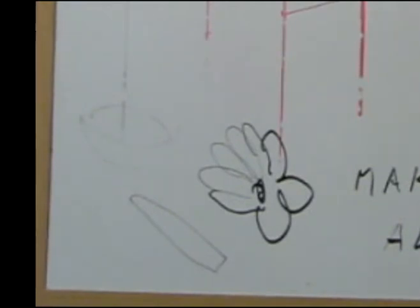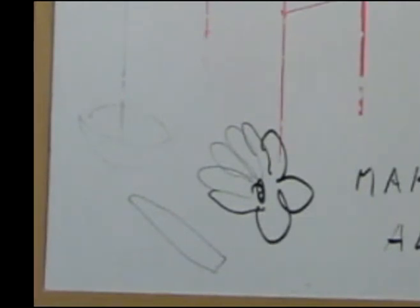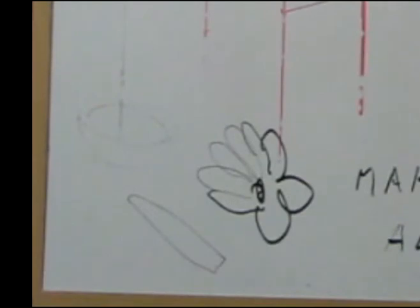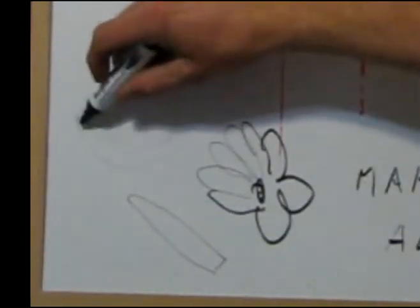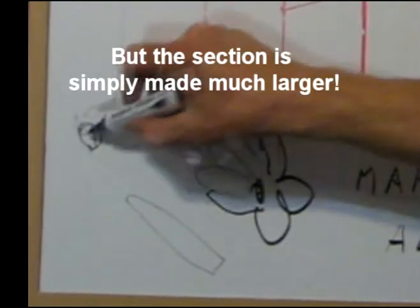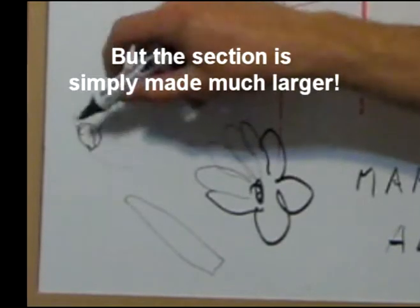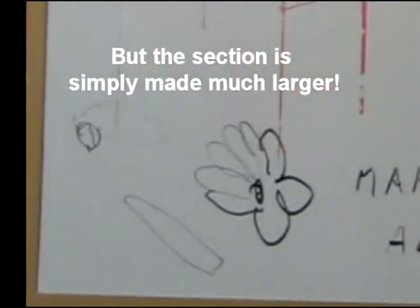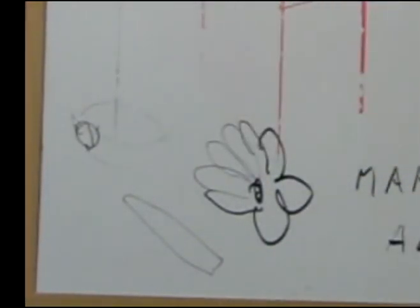Germany also has other people who have designed parabolic solar cookers and they're quite different. One is Wolfgang Scheffler and his thing isn't a dish at all, it's just a section of the dish, so it might be a section over here somewhere and he just uses that section of the dish and it seems to work quite well.